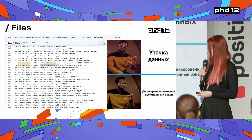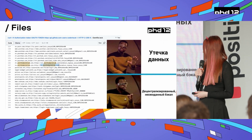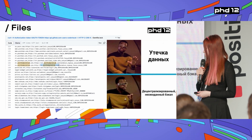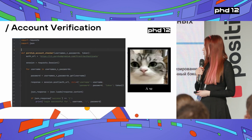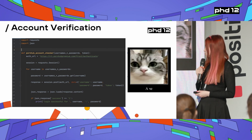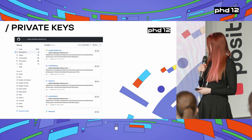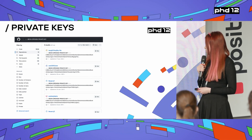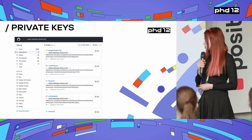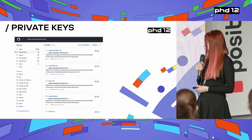Secrets appear not only in files and code. Sometimes people leak whole files with credentials. As you can see on the screen in this example, account verification is also pretty simple. As a result, we have a very simple attack angle, and you can find these on GitHub — different keys.